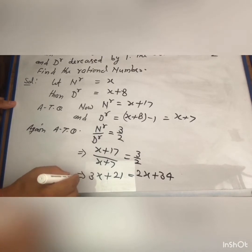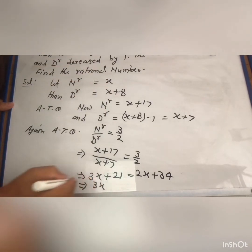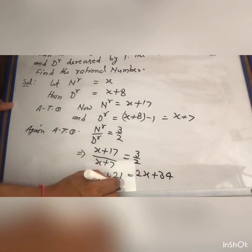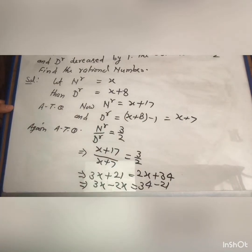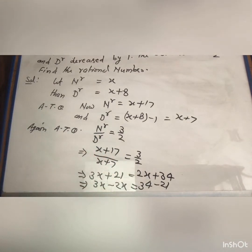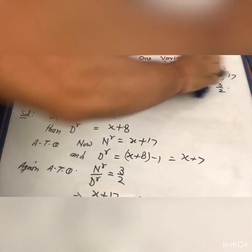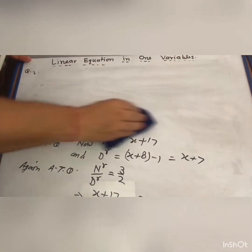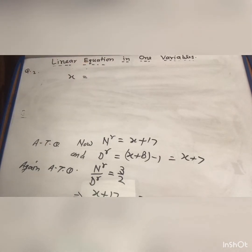Now transpose the variables to one side and numbers to the other side. Bring 2x to the left as minus 2x, and transpose 21 to the right as minus 21. So we get 3x minus 2x equals 34 minus 21, which gives x equals 13. But this is the value of x, not the final answer.